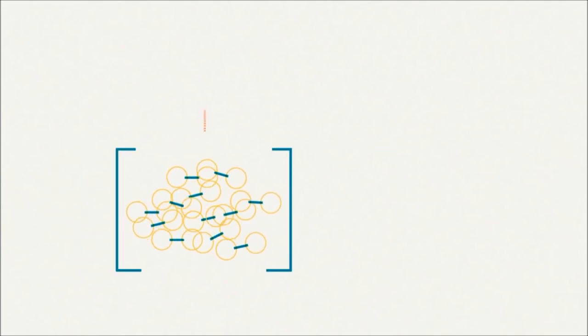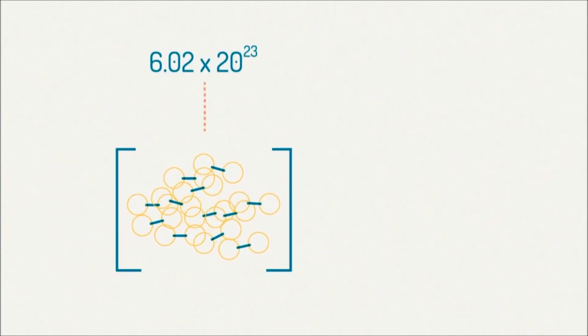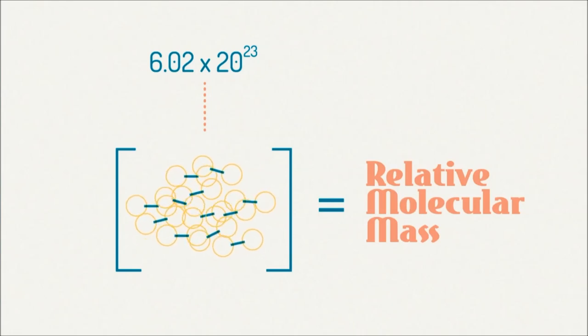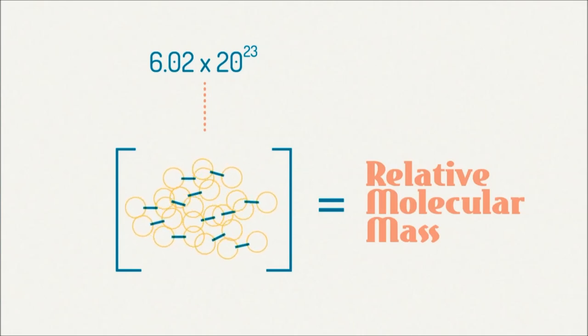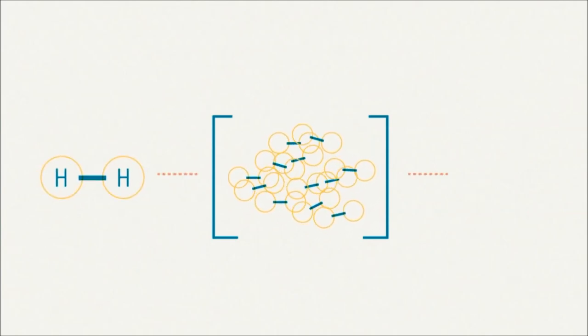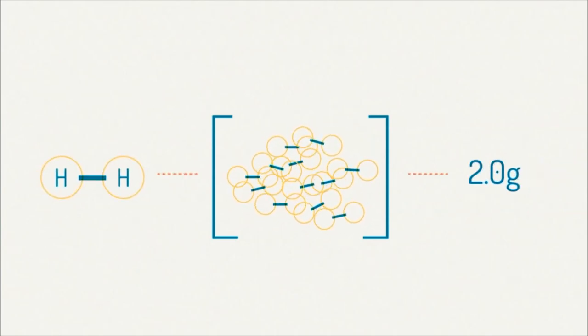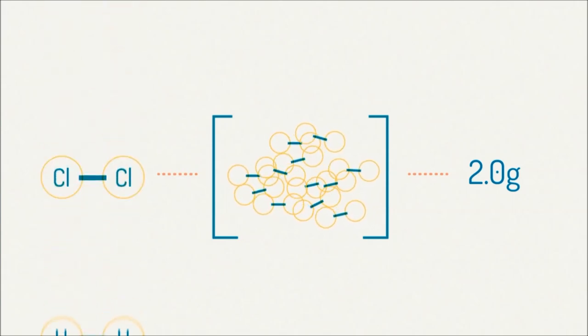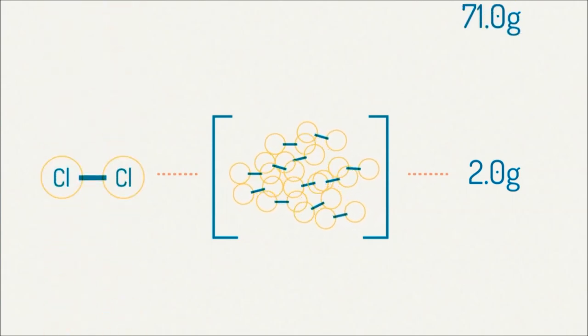For molecules, the mass of Avogadro's number of particles is equal to their relative molecular mass in grams. So, for example, the mass of Avogadro's number of hydrogen molecules, or H2, is 2 grams, and the mass of Avogadro's number of chlorine molecules, Cl2, is 71 grams.